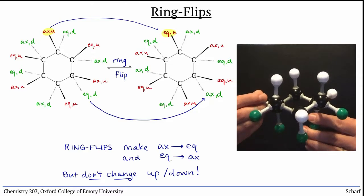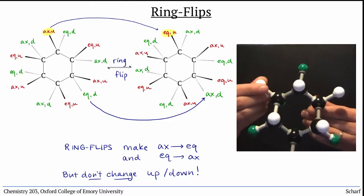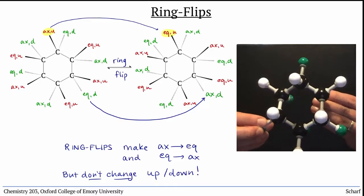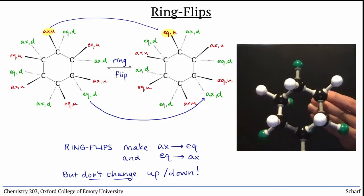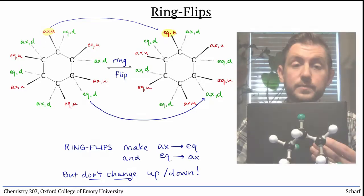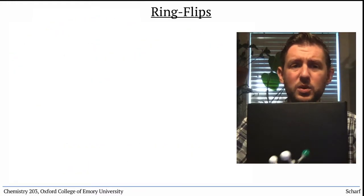So a traditional drawing with wedges and dashes is ambiguous. It could represent either possible chair conformation. We'll talk about how we resolve that ambiguity in the next video. But first, there's one more question to ask.